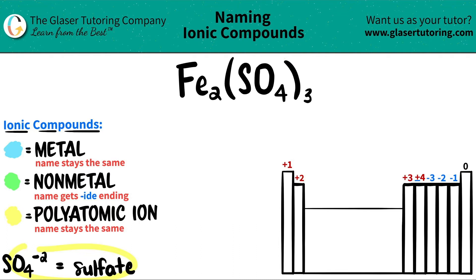Memorize these polyatomics. So if you see an SO₄, it's always a negative two charge, which we're going to see in a little bit and use it. And SO₄ is always sulfate. So this is sulfate, the SO₄, and then iron.